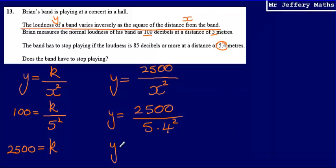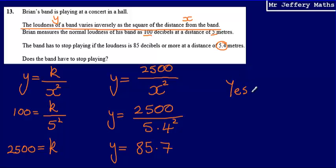The number of decibels at a distance of 5.4 metres is 85.7. So does the band have to stop playing? Yes, they do, because at a distance of 5.4 metres, the band will be playing at 85.7 decibels, which is above the 85 decibel threshold.